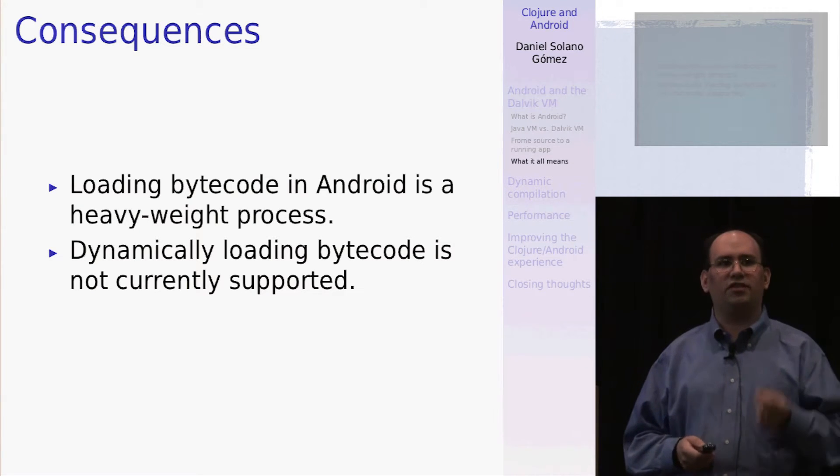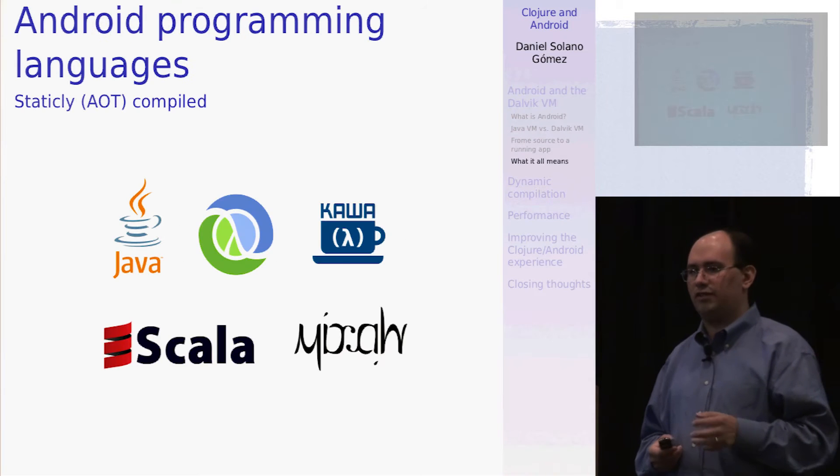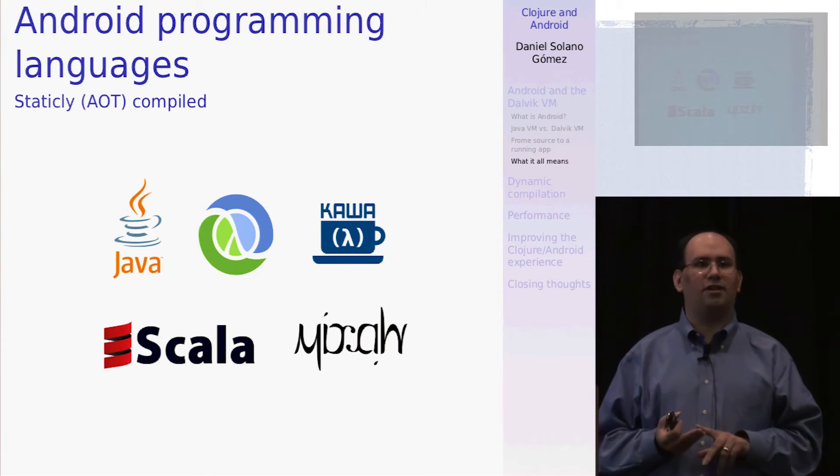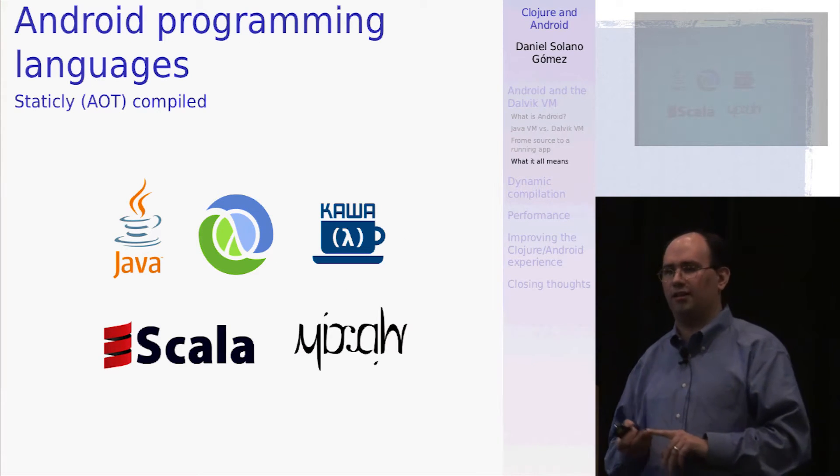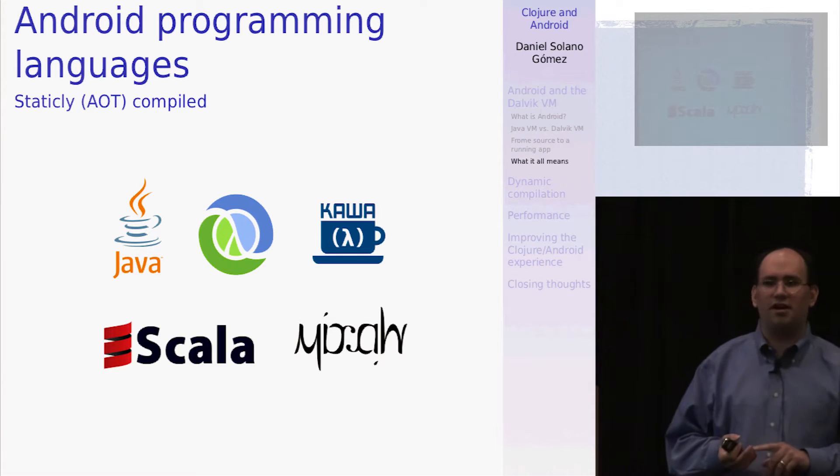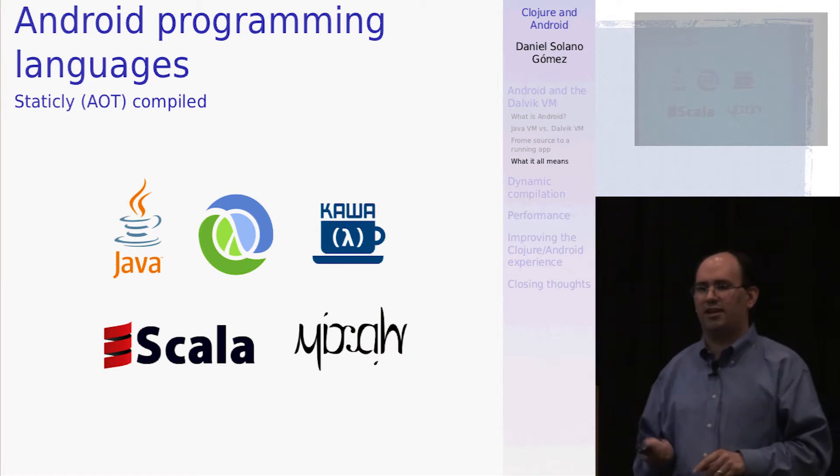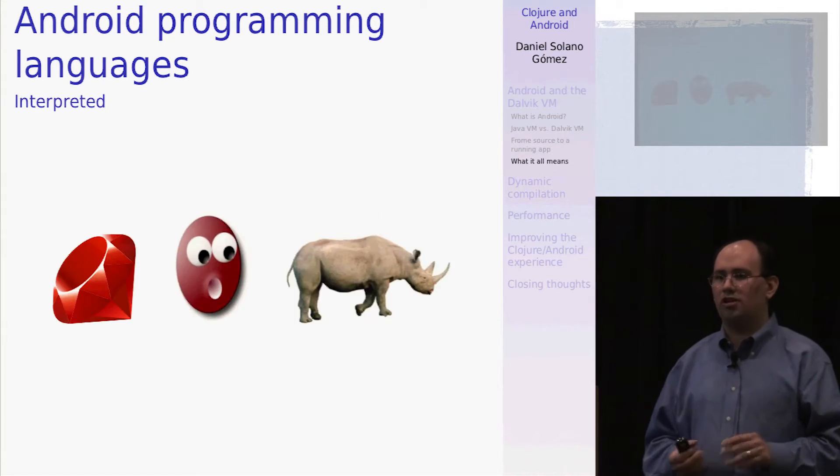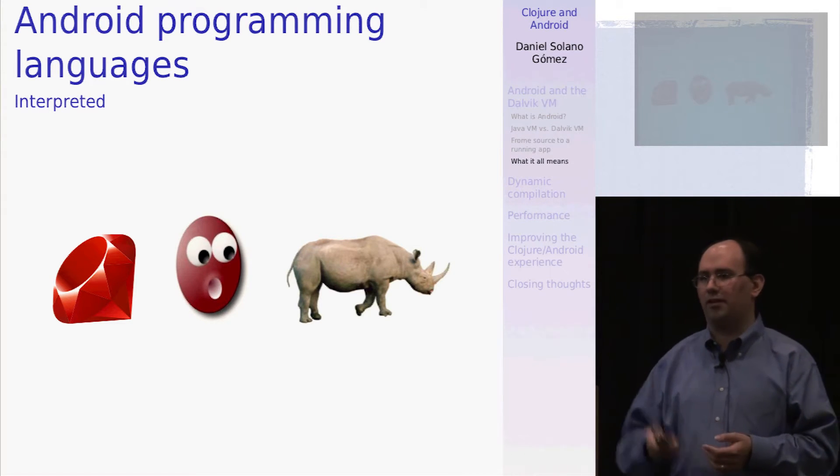So this means that if you're interested in developing for Android, you have a choice between strictly or ahead of time compiled languages, such as Java, Clojure, Mirah, and Scala, or you can use interpreted languages, like JRuby, Beanshell, or JavaScript on Rhino.